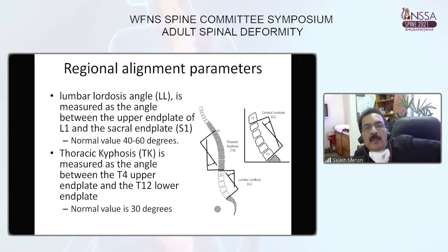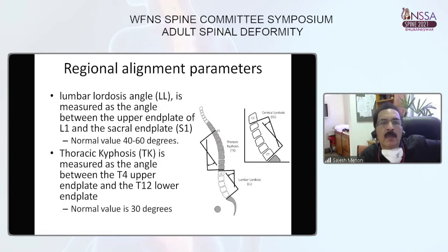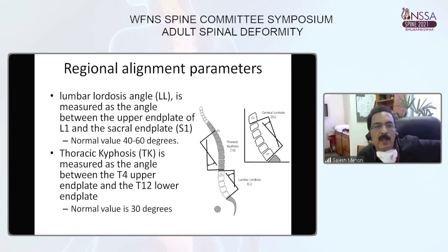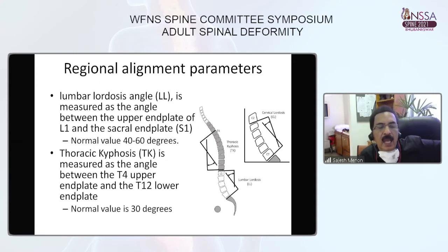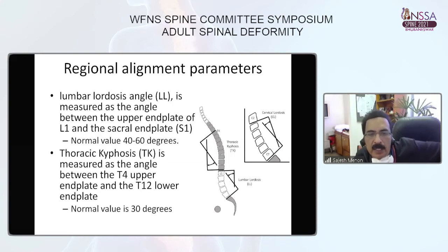For regional alignment parameters, two are commonly used: lumbar lordosis and thoracic kyphosis. Lumbar lordosis is measured between the upper endplate of L1 and the sacral endplate of S1, with a normal value between 40 to 60 degrees. Thoracic kyphosis is measured as the angle between the T4 upper endplate and the T12 lower endplate by the Cobb method, with a normal value of about 30 degrees.